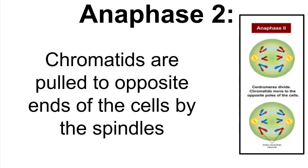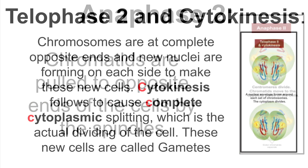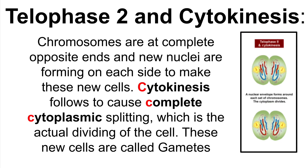We then have anaphase II. During this phase, the chromatids are pulled away to the opposite ends of the cells by the work of the spindles. Finally, we have telophase II and cytokinesis. During this phase, the chromosomes are at complete opposite ends and new nuclei are forming on each side to make these new cells. Cytokinesis follows to cause complete cytoplasmic splitting, which is the actual dividing of the cell.